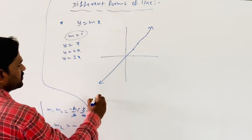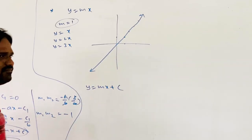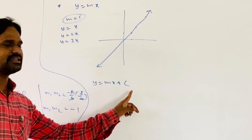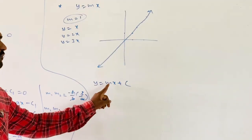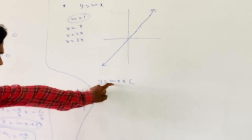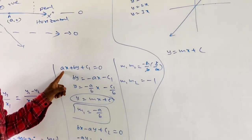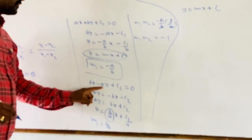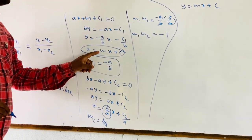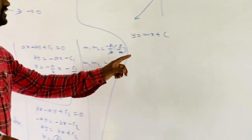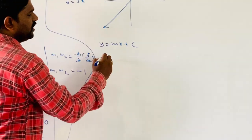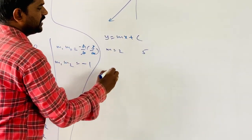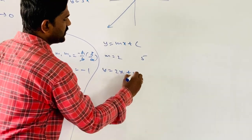The next form is y = mx + c, which is known as the slope-intercept form. Here, c is known as the y-intercept and m is the slope of the line. For example, if m = 2 and the y-intercept is 5, then the equation of the line is y = 2x + 5.